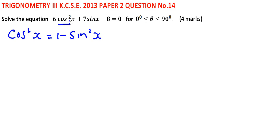So we replace cos squared x with that, and then we have 6 times 1 minus sin squared x plus 7 sin x minus 8 equals 0. You open the bracket and rearrange the equation